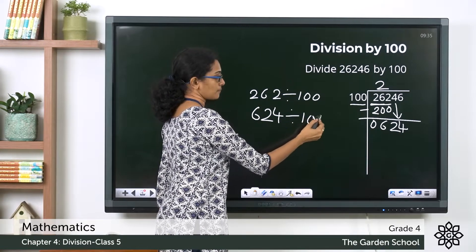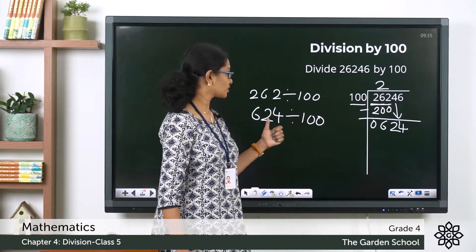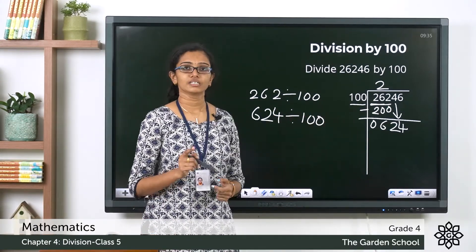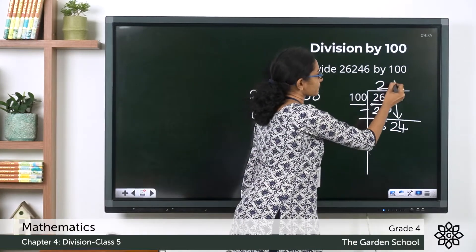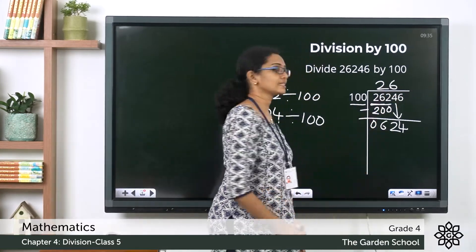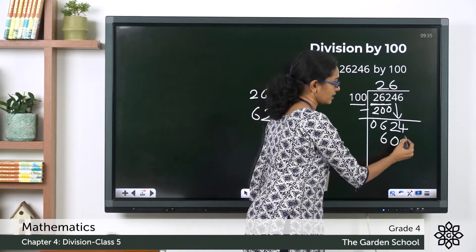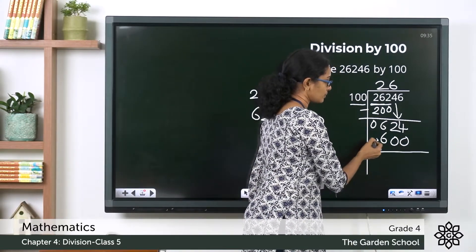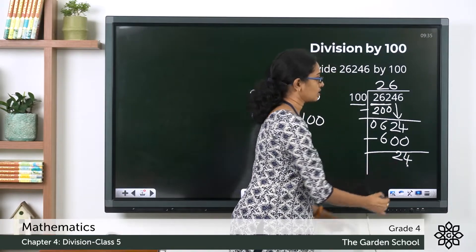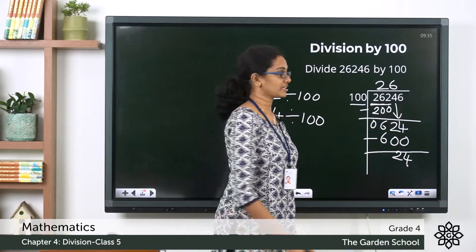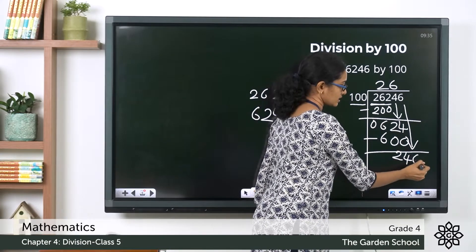Our next dividend is 624. We divide 624 by 100. How many hundreds will go in 624? Six — since 100 times 6 is 600. We write 6 here, subtract 600 from 624, giving us a remainder of 24. There is one more digit to bring down, which is 6.